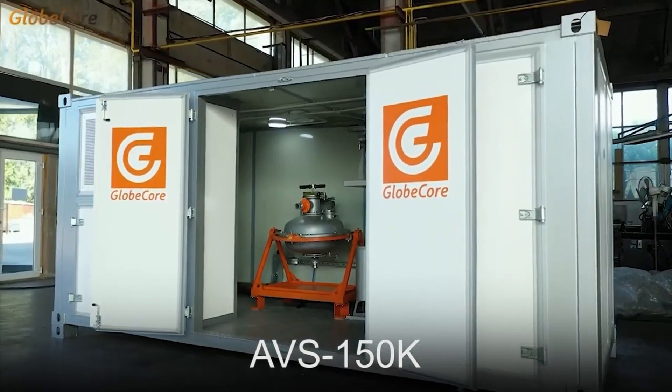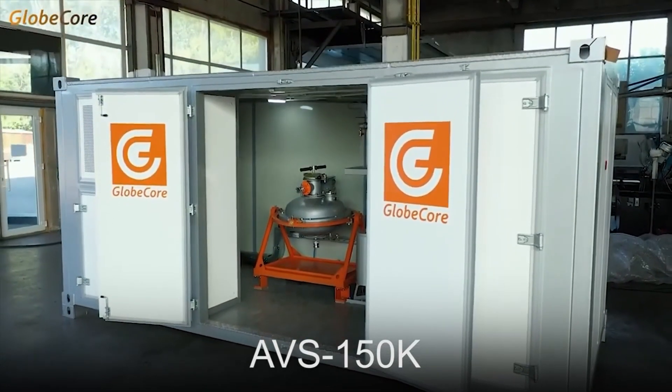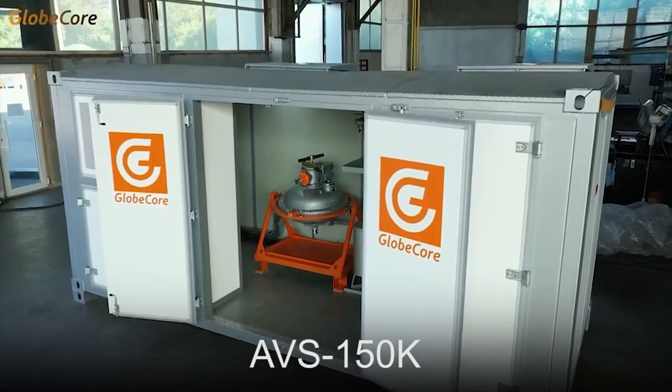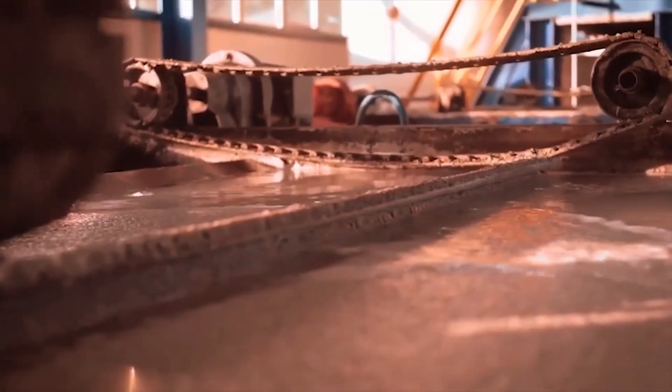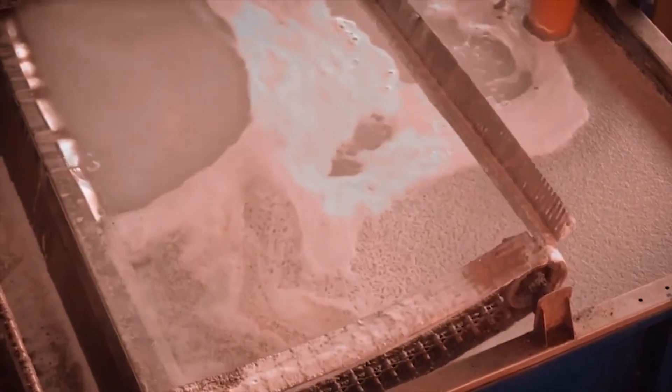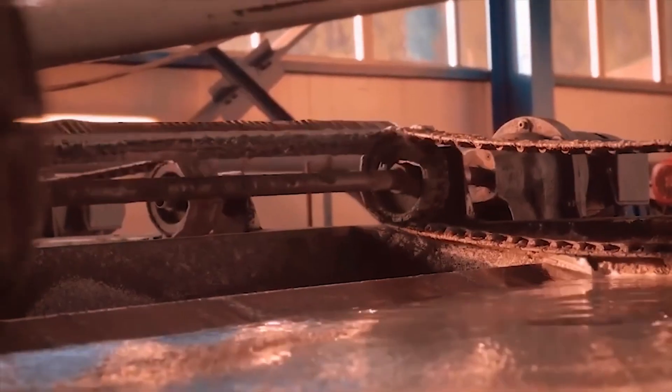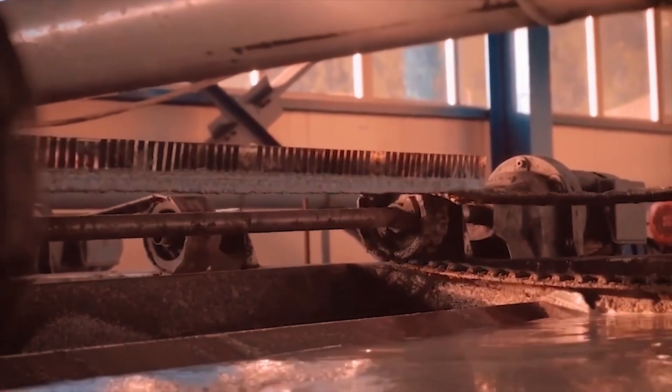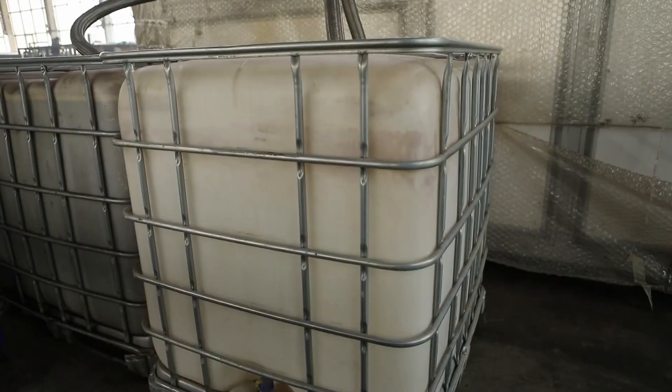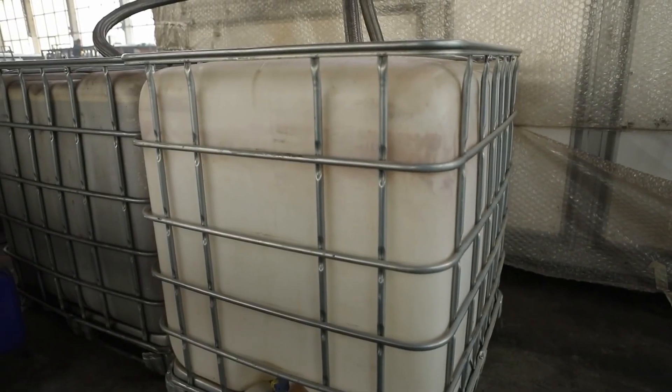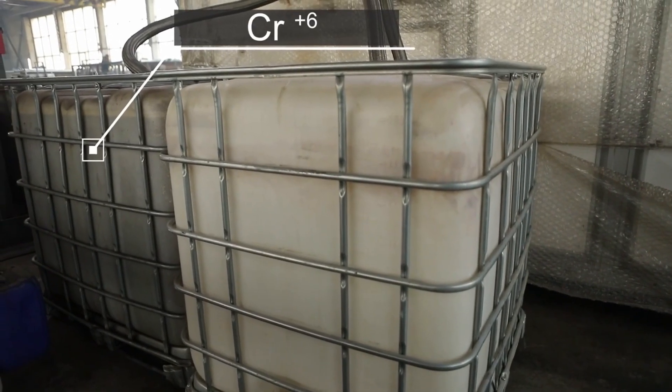Let us discuss how these processes are implemented in GlobeCore AVS-150K mobile complex. Wastewater may come from different workshops and contain chromium of various concentrations. In this case, it is difficult to correctly calculate the amount of chemical agent. Therefore, during the work shift, all the effluents are collected into a separate balancing tank where the concentration is equalized.